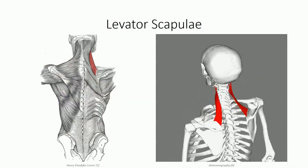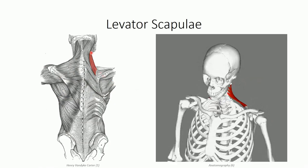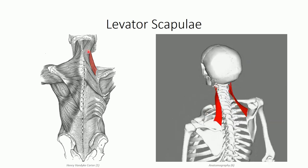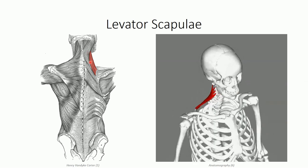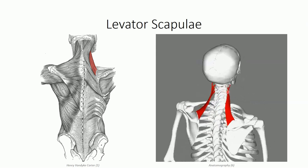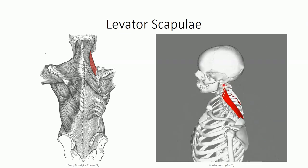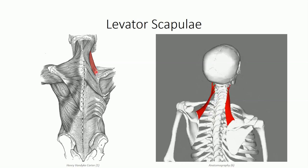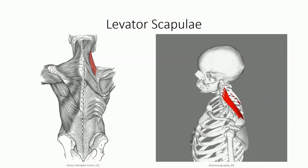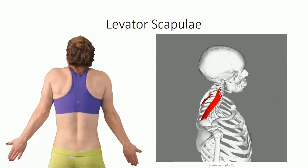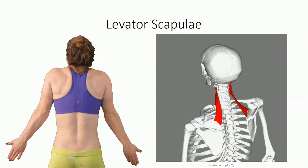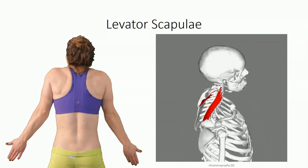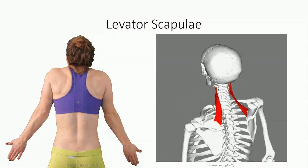Lying deep to trapezius is the levator scapulae muscle. It has a rounded appearance with fibers running parallel to each other along the course of the belly. It originates off the posterior tubercles of the transverse processes of C1 through C4 and runs inferiorly to insert on the superior angle of the scapula. As the name implies, the levator scapulae works with the upper fibers of trapezius to elevate the scapula. Its vascular supply is from the dorsal scapular artery and it's innervated by the dorsal scapular nerve.